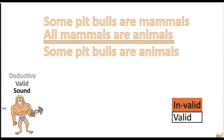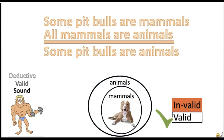Here's another practice problem: 'Some pit bulls are mammals. All mammals are animals. Therefore, some pit bulls are animals.' Is this argument valid or invalid? Valid — that's correct. The first premise is false, but if you assume that at least one pit bull is a mammal, and that all mammals are inside the animals group, then at least one pit bull would have to be inside the animals group.